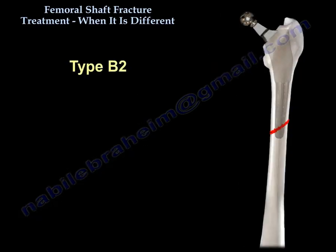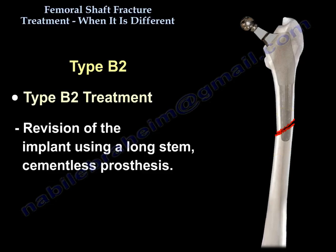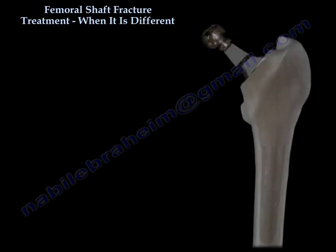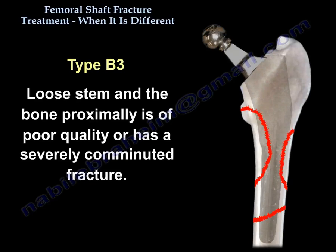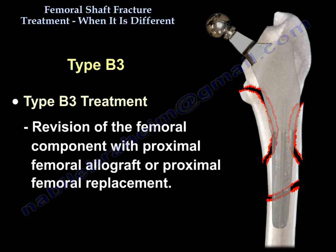In the B2 fracture, the stem is loose — you will know this because the patient may have had pain before the fracture, or the stem subsided after the injury. You are going to revise the implant using a long stem cementless prosthesis. In B3, you have a loose stem and the proximal bone is of poor quality or has a severely comminuted fracture. The treatment is revision of the femoral component with proximal femoral allograft or proximal femoral replacement.